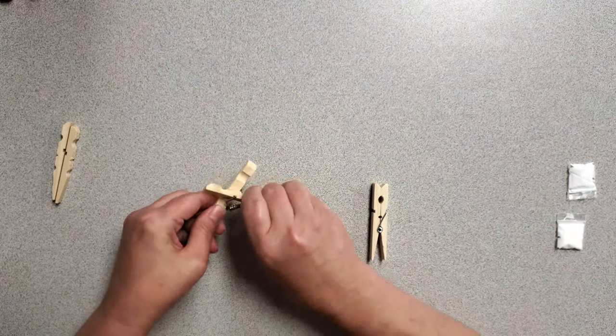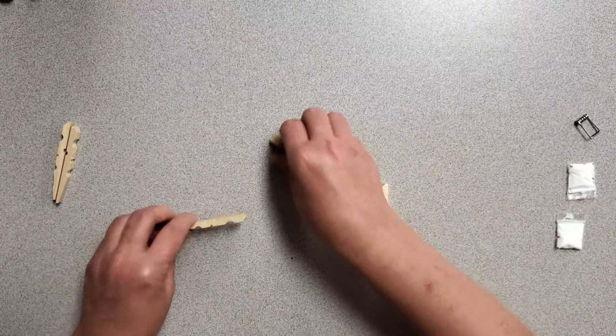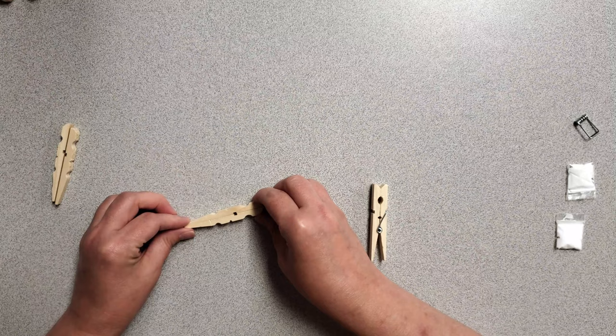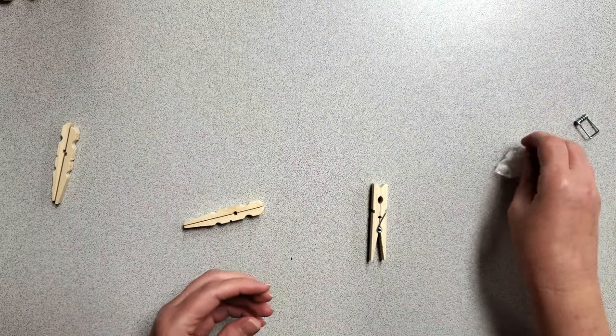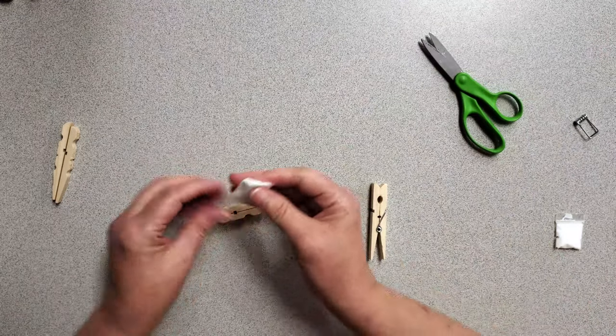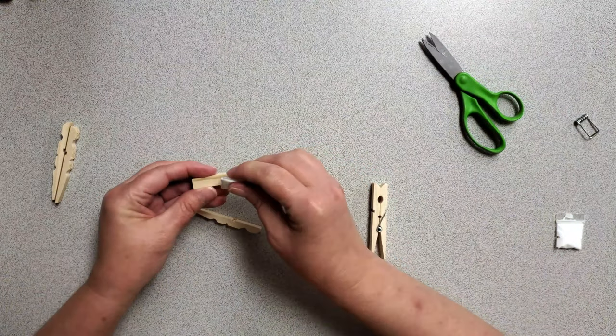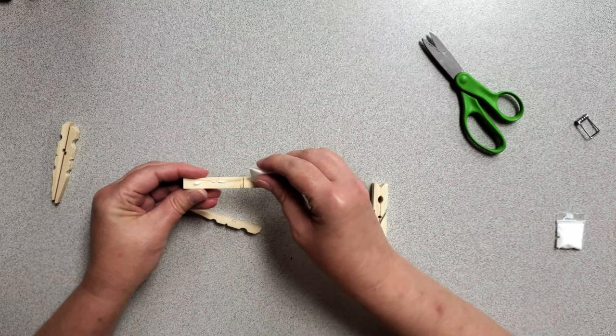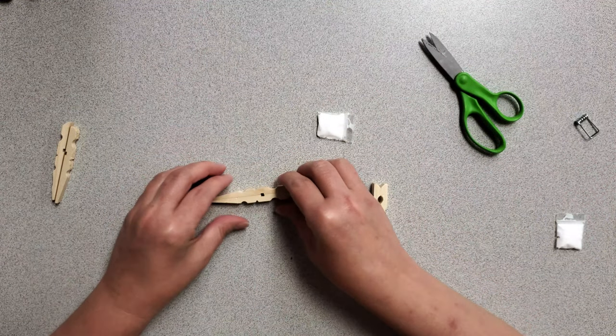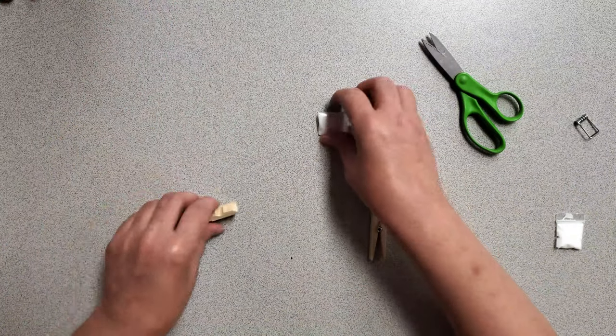Once we have disassembled our clothespins, you will start by gluing two of them together, backsides together, flat. Inside of the kit is a little packet of glue. All we need to do is snip the corner and if you need help applying any of the glue, a q-tip will work really well as well. And then we set those aside.